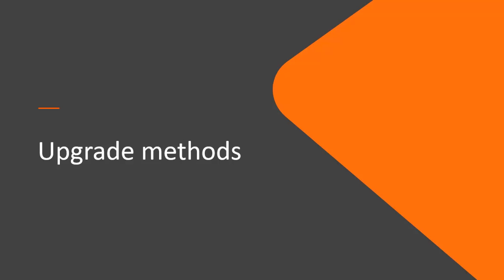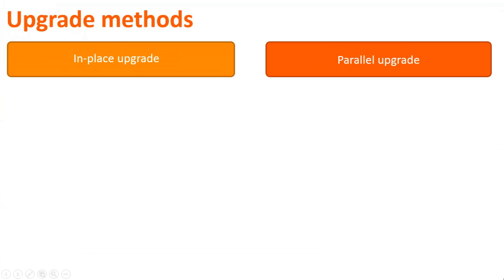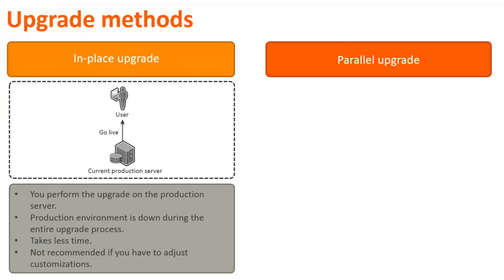Now let's look at the different upgrade methods you can opt for. You can either perform an in-place upgrade or a parallel upgrade. During an in-place upgrade, you perform the entire upgrade on the production server. Your production environment is down during the entire upgrade process. Even though the in-place upgrade takes less time in comparison to the parallel upgrade method, this method is not recommended if you have to adjust or retain your customizations, and if you are upgrading from a version earlier than 7.6.04.